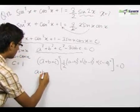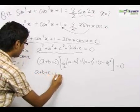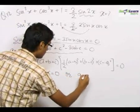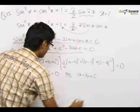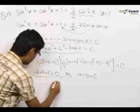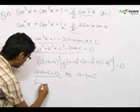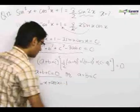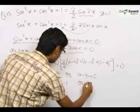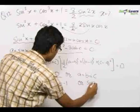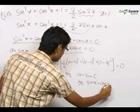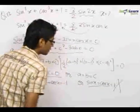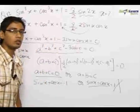So we can get a + b + c = 0 or a = b = c. Using this equation, we get sinx + cosx = -1, or we get sinx = cosx = 1, which is definitely not possible because sinx equals cosx only when they are both equal to 1/√2.